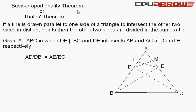The Basic Proportionality Theorem, also known as Thales' Theorem, states that if a line is drawn parallel to one side of a triangle to intersect the other two sides, like here where BC is parallel to DE.